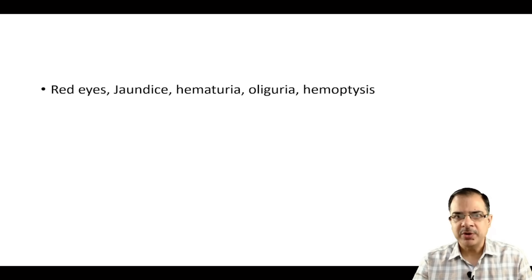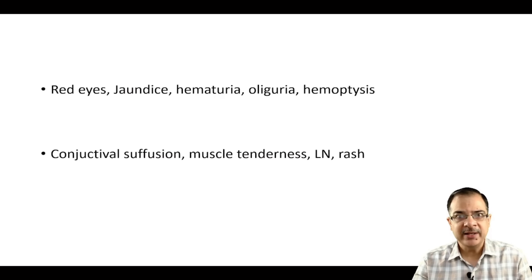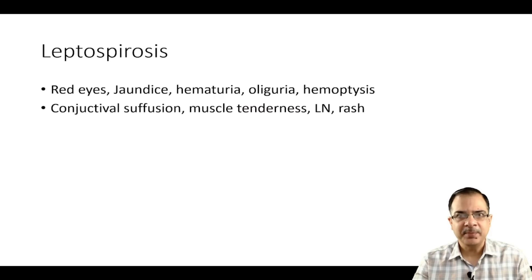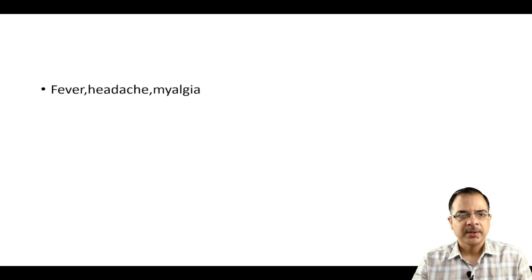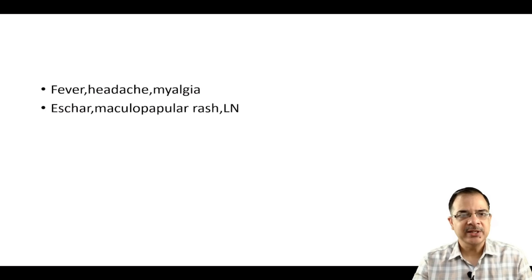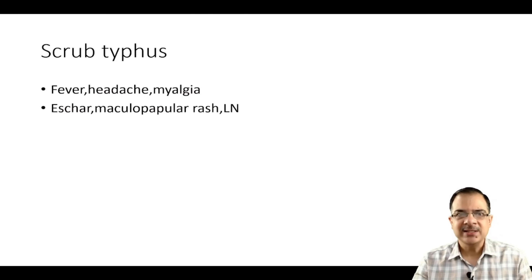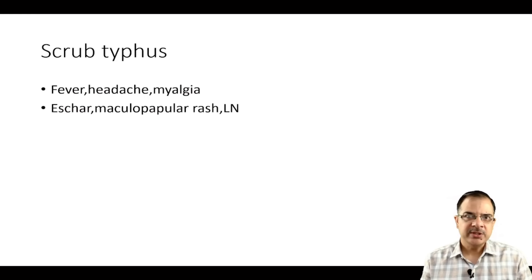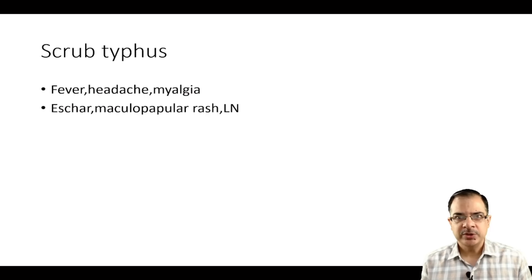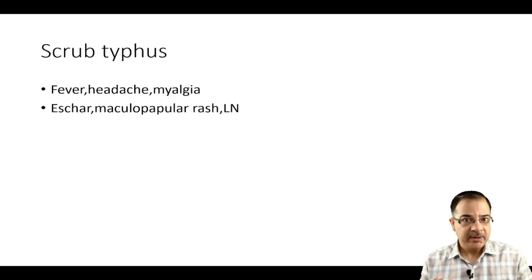Red eyes, jaundice, hematuria, oliguria, hemoptysis — whenever icterus is present along with hemoptysis and renal failure, always suspect leptospirosis. Fever with headache, myalgia, maculopapular rash, and lymphadenopathy points to scrub typhus. This is how we clinically suspect the cause of different types of fever. The investigation approach will be discussed in the next video.